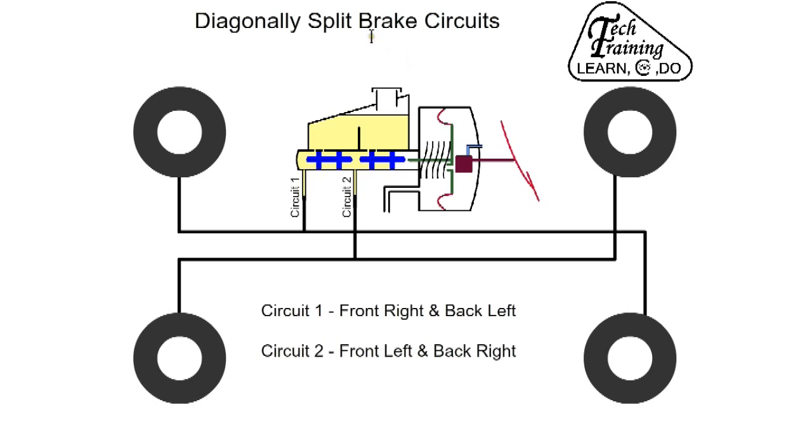With diagonally split brakes, two circuits are used. Circuit one, front right and back left. Circuit two, front left and back right. If a leak occurs on one circuit, the car can still be stopped with the other circuit.